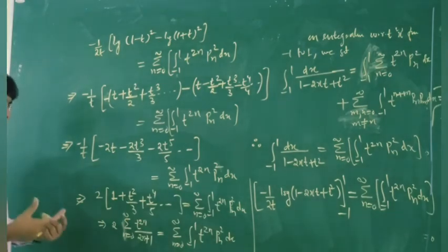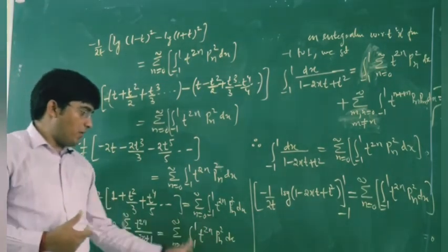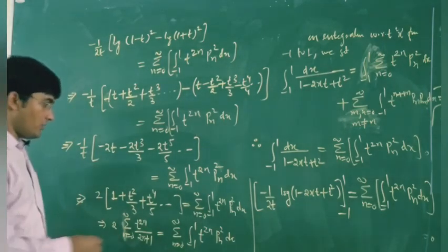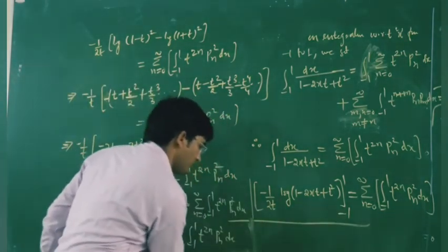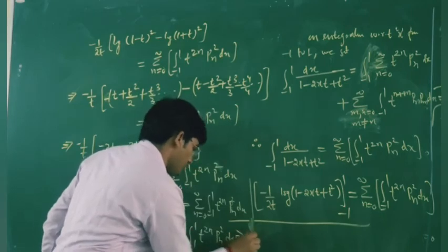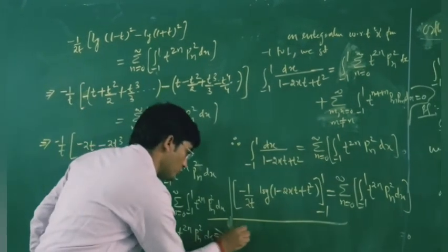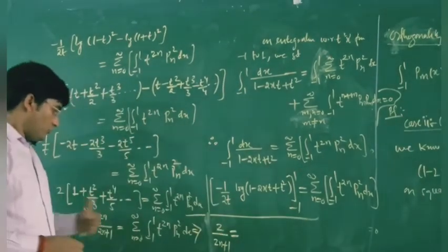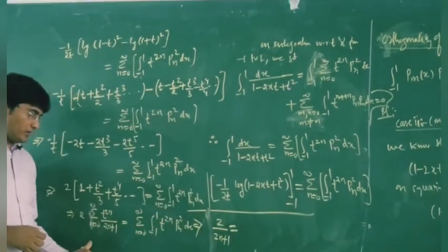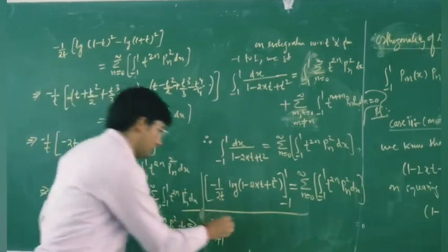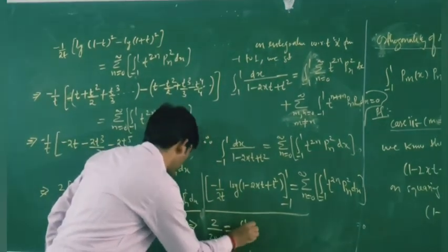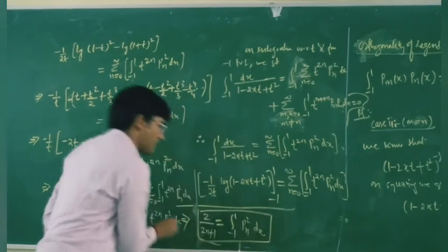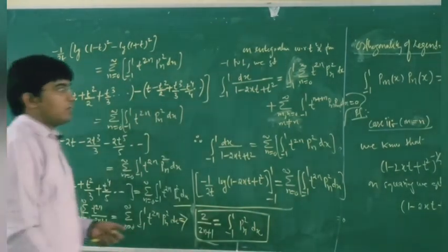Now let us equate the coefficients of t^(2n) on both sides. Equating the coefficient of t^(2n) on both sides gives 2/(2n+1) on the left-hand side and the integral from minus 1 to 1 of P_n² dx on the right-hand side.